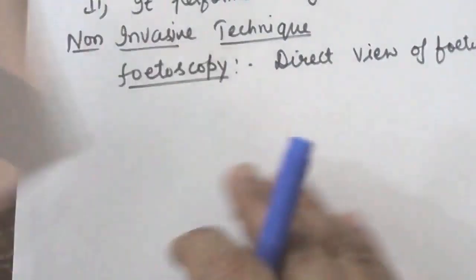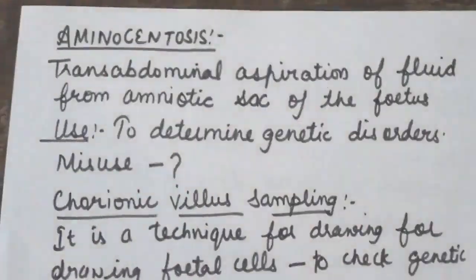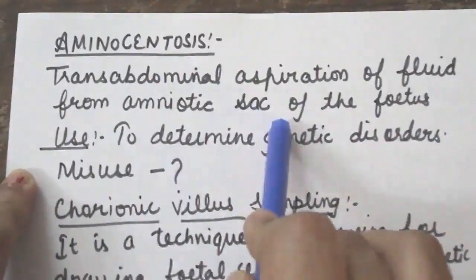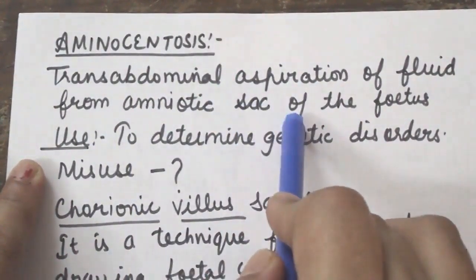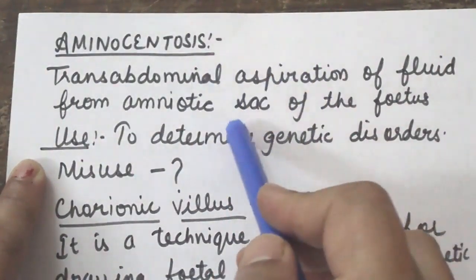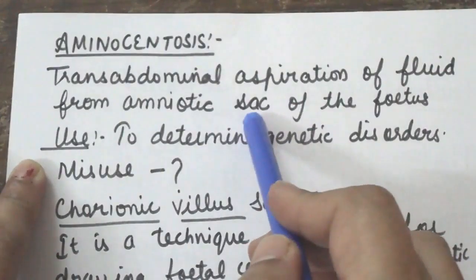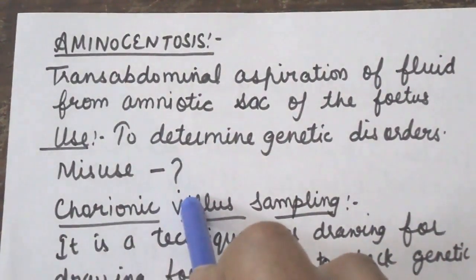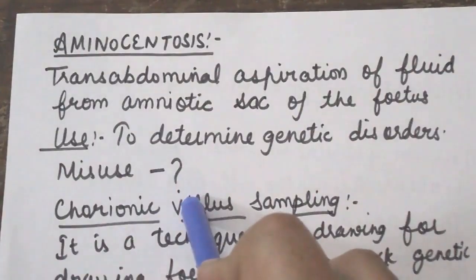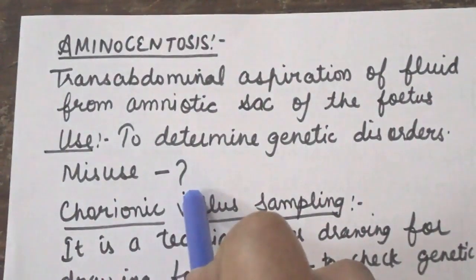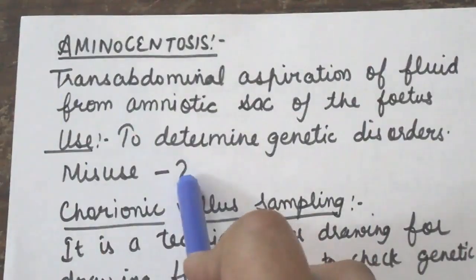Next is amniocentesis — the transabdominal aspiration of fluid from the amniotic sac of the fetus. This fluid is used to diagnose genetic disorders in the embryo, or to know the sex of the child. However, today this is misused in our country for killing the normal female fetus. Some way out to end this malpractice must be found; understanding equality of sexes can help. Determination of sex by this method has been banned.